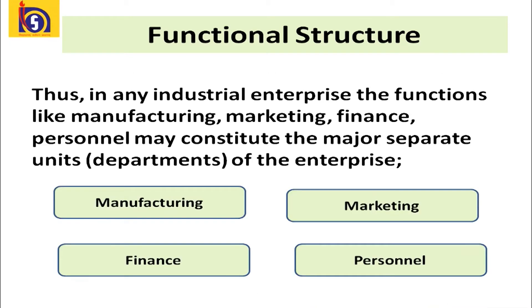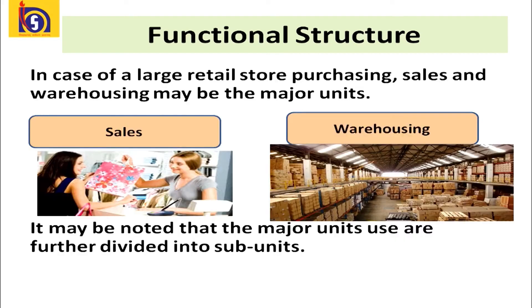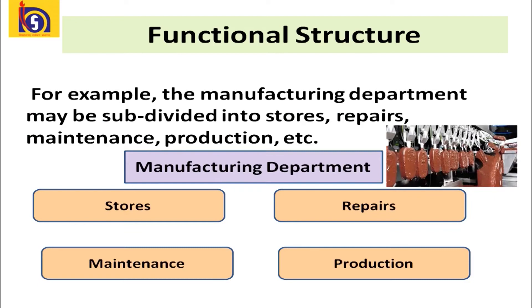The most commonly used forms of organization structure are functional structure and divisional structure. Functional structure is formed by grouping together all activities into functional departments and putting each department under one coordinating head. In an industrial enterprise, functions like manufacturing, marketing, finance, and personnel may constitute the major separate departments. In a large retail store, purchasing, sales, and warehousing may be the major units. Major units are further divided into sub-units — for example, the manufacturing department may be sub-divided into stores, repairs, maintenance, production, etc.